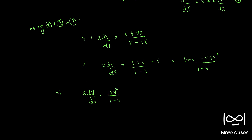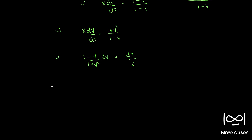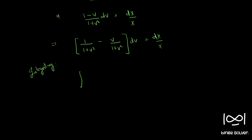This can be solved using the method of separation of variables. We bring all terms of v to one side and X to the other, giving (1 minus v)/(1 plus v squared) dv equal to dX/X. Splitting the left side, we get 1/(1 plus v squared) minus v/(1 plus v squared) dv equal to dX/X.